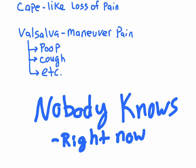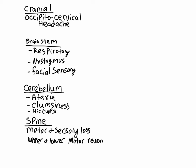Chiari 1 malformations have a basic breakdown of symptoms. You can have occipitocervical headaches. In the brainstem, you can have respiratory problems, nystagmus, and facial sensory problems. Basically, any cranial nerve in the brainstem has a small chance of getting compressed. Facial sensory comes from cranial nerve 7, nystagmus from cranial nerve 8. The likelihood of each cranial nerve involvement is correlated with where they are in the brainstem — cranial nerves 7 and 8 are fairly low, so they have a higher likelihood of being affected.